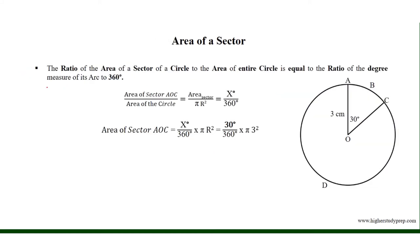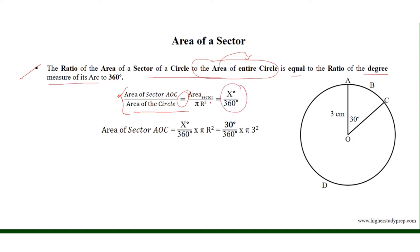Area of a sector: the ratio of the area of a sector of a circle to the area of the entire circle is equal to the degree measure of its arc to 360 degrees. If we consider the sector A, O, C, then the arc with respect to this sector is A, B, C, which has a measure of X equal to 30 degrees.